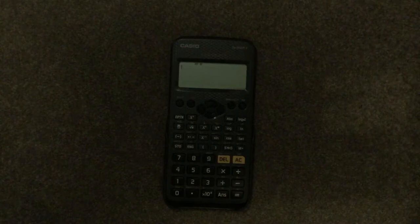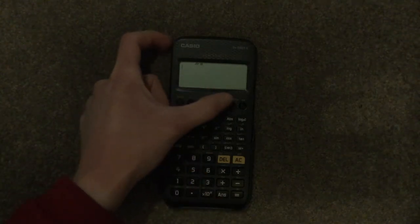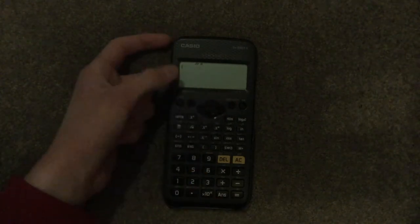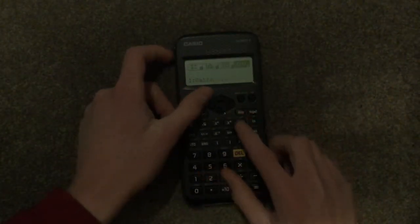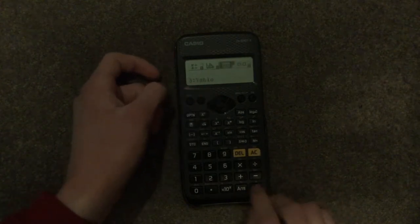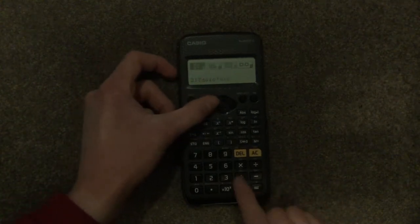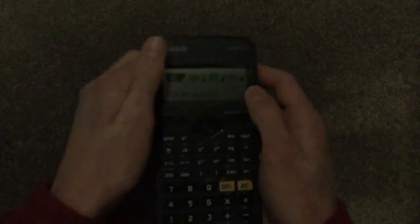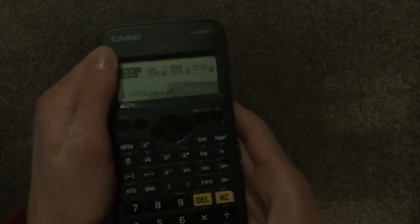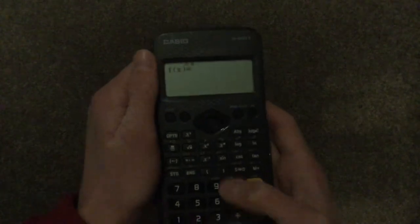I'm going to start off by showing you how you can check simplified algebraic fractions. The first thing we need to do is put the calculator into the correct mode, that's table mode, so you can do that by pressing menu. And as you can see, we are presented with this screen.